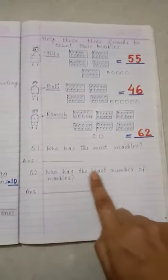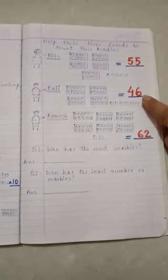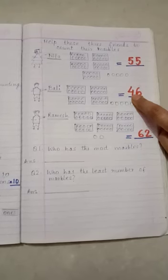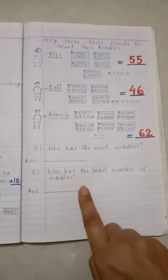Second, who has the least number of marbles? The minimum number is 46 because 4 is at the tens place. So, Bali has the least number of marbles.